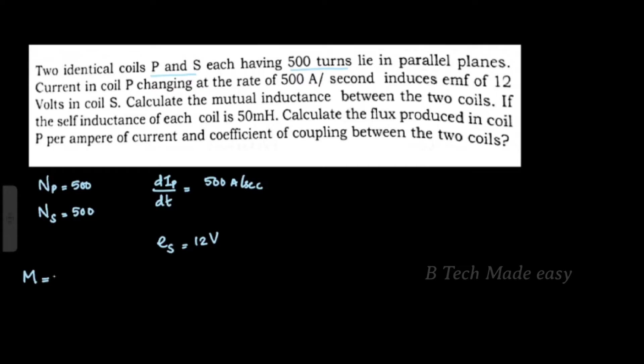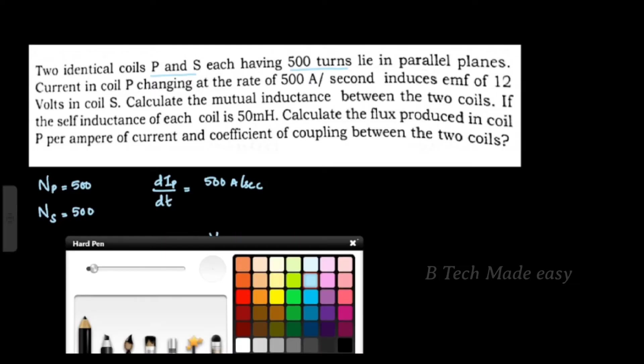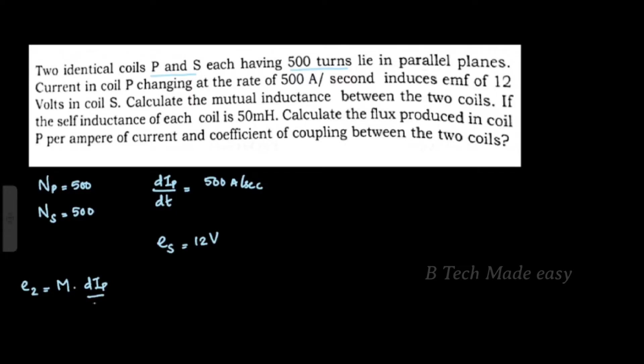The mutually induced EMF formula is: E2 is equal to M multiplied by dIP/dt. For comparison, self-induced EMF is equal to N into dI/dt. E2 here is the mutually induced EMF.